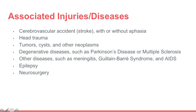Associated injuries or diseases that go along with neurogenic stuttering include cerebrovascular accident with or without aphasia, head trauma, tumor, cysts or other neoplasms, degenerative diseases like Parkinson's disease or multiple sclerosis, other diseases such as meningitis, Guillain-Barré syndrome, and AIDS, as well as epilepsy and neurosurgery. Importantly, there is no specific site of lesion or particular area of the brain linked to neurogenic stuttering — any unilateral, bilateral, focal, or diffuse lesions, cortical or subcortical, right or left hemisphere, or any lobe, does not matter.